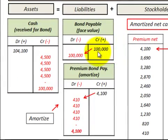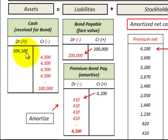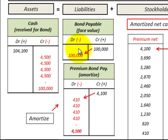Let's look at our example. We have a $100,000 face value bond with a 9% stated rate of interest, for five years, which gives us ten semi-annual payments. Over here we receive cash of $104,100 for that bond, and that's based on discounting this bond's maturity value of $100,000 plus its semi-annual interest payments, discounted at the market rate of interest to get the $104,100.